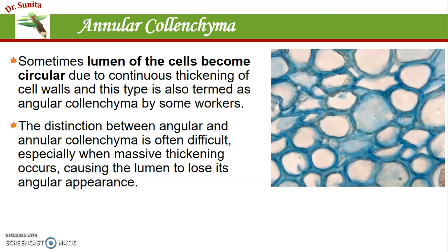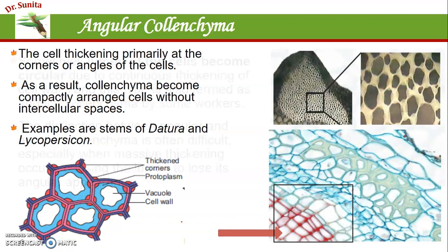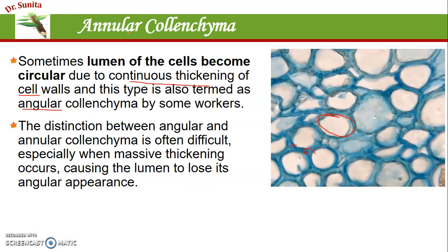Next is annular colenchyma — there is often confusion here, as some scientists consider angular and annular to be similar. The difference is that in annular colenchyma, the lumen gains a completely circular form due to continuous thickening of the cell wall — thickening occurs at angles as well as elsewhere. Sometimes when angular thickening becomes excessive, the thickenings at two angles fuse to form a circular structure, causing confusion between annular and angular colenchyma. The distinction becomes very difficult especially when massive thickening occurs in angular colenchyma.